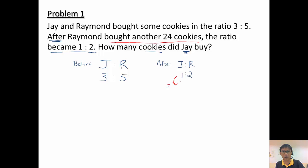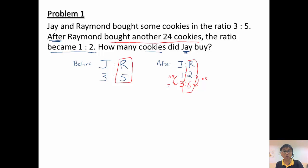If I multiply by 3 on one side, I need to multiply by 3 on the other side — this is what we know for equivalent ratio. So 2 times 3 becomes 6. Before, Raymond had 5 units; after, Raymond had 6 units. So how many more units did he have? One more. That corresponds to the 24 cookies he bought, so 1 unit equals 24. Jay has 3 units, so 3 times 24 equals 72. That is how many cookies Jay bought. The key here is Jay remained the same.